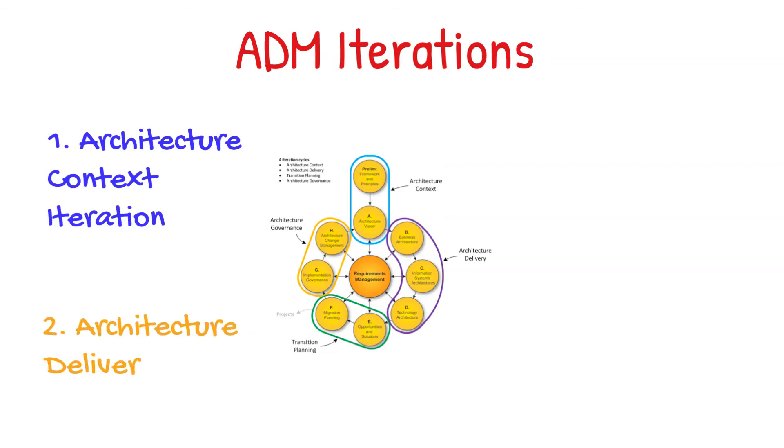Second is the Architecture Definition Iteration, which is a set of steps that will show us a model that we are going to be working with. The third is the Transition Planning Iteration, a set of steps where we begin to deploy or plan to deploy what we have designed.